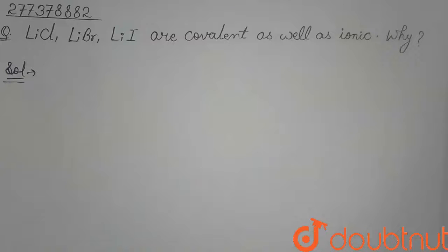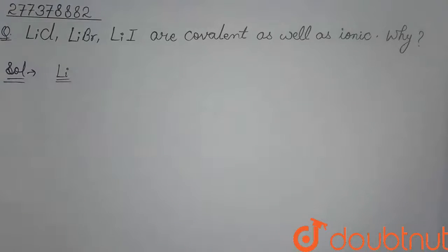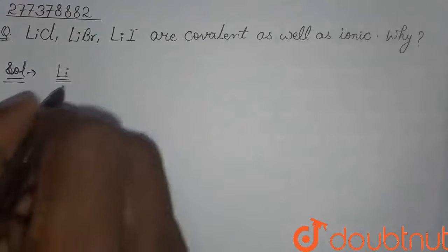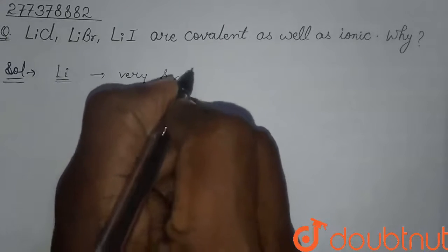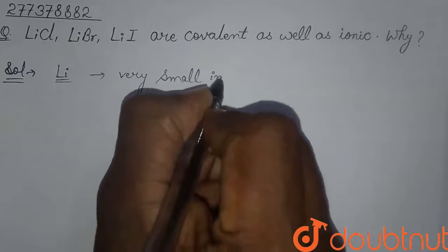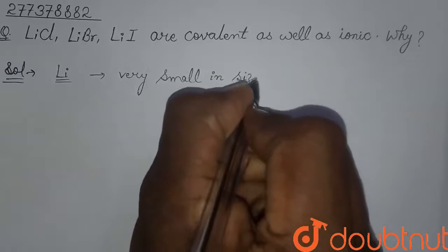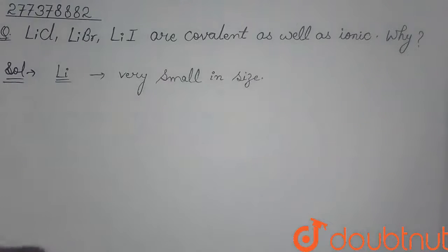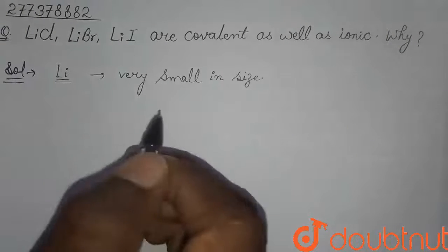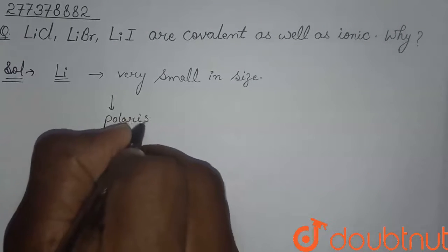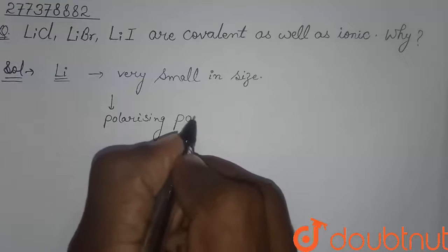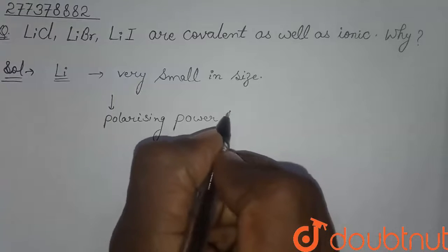Hello students. This question I have given is that lithium chloride, lithium bromide and lithium iodide are covalent as well as ionic. Why? So lithium is very small in size. Lithium's atomic size is very less, and due to which polarizing power is very high.